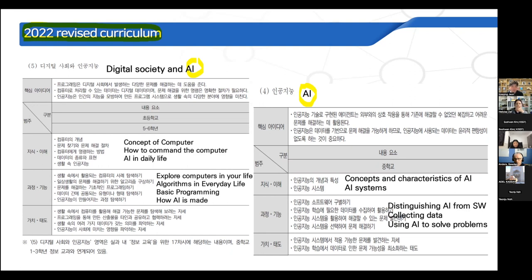In primary school, AI education will start in 2025. Students will learn the concept of computers, how to command the computer, and about AI in daily life. They will also explore computers in their lives, learn algorithms, learn basic programming, and learn how AI is made.